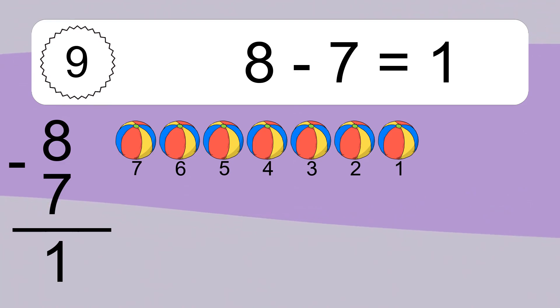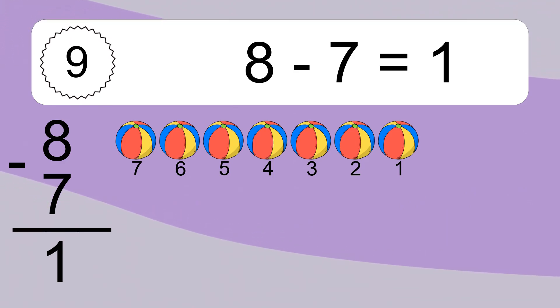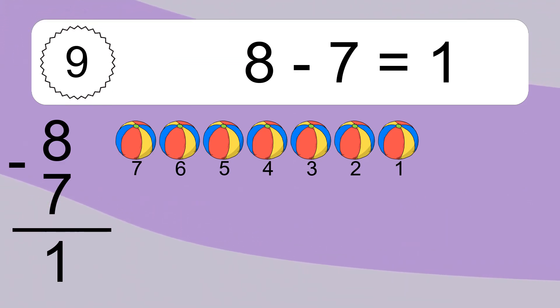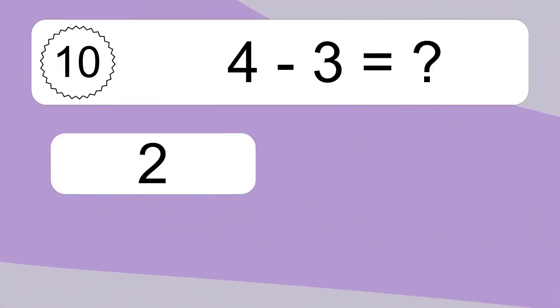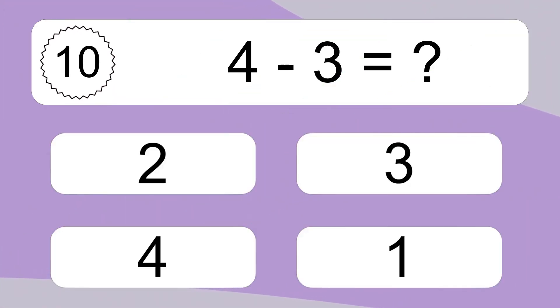8 minus 7 equals what? 8 minus 7 equals 1. Let's count it: 7, 6, 5, 4, 3, 2, 1.